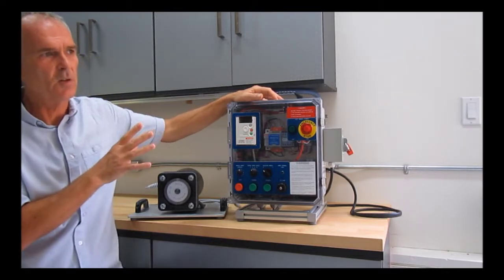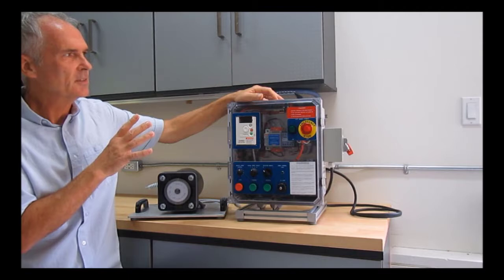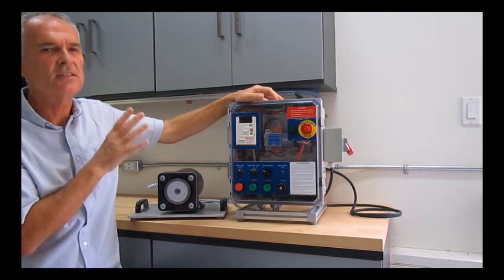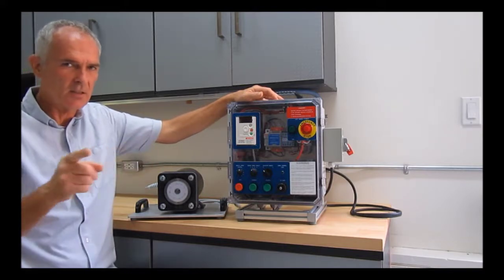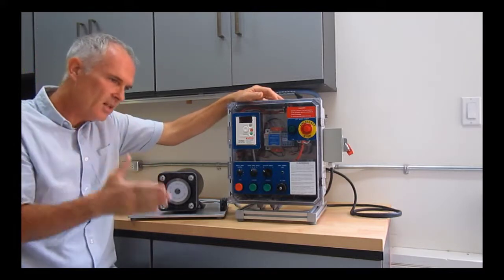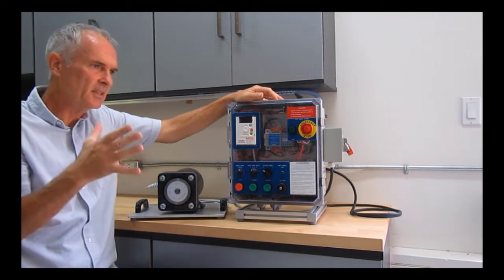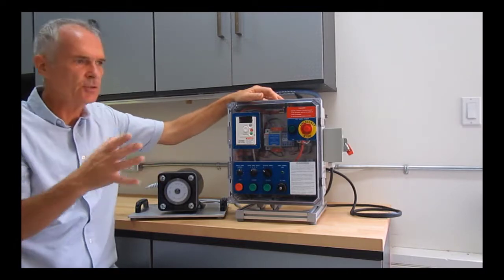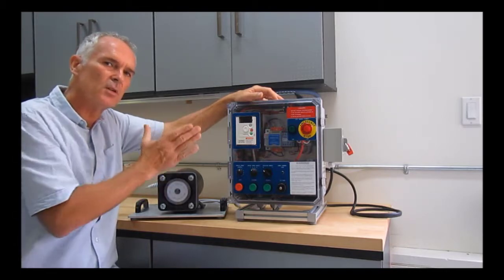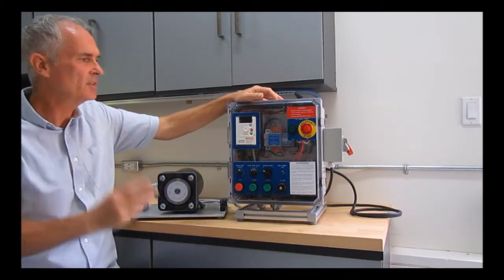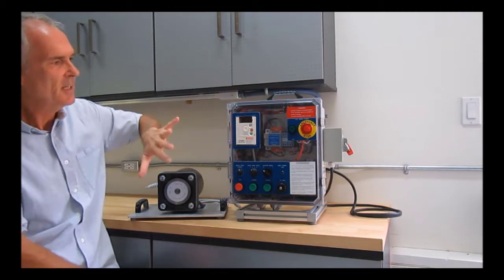Lastly, the third mode is what's called performance mode. We can set it to performance mode, which is what they call constant torque. Constant torque is used in metal turning, metal cutting, crushing, extruding applications where you need a constant torque through the whole operating range of the motor.